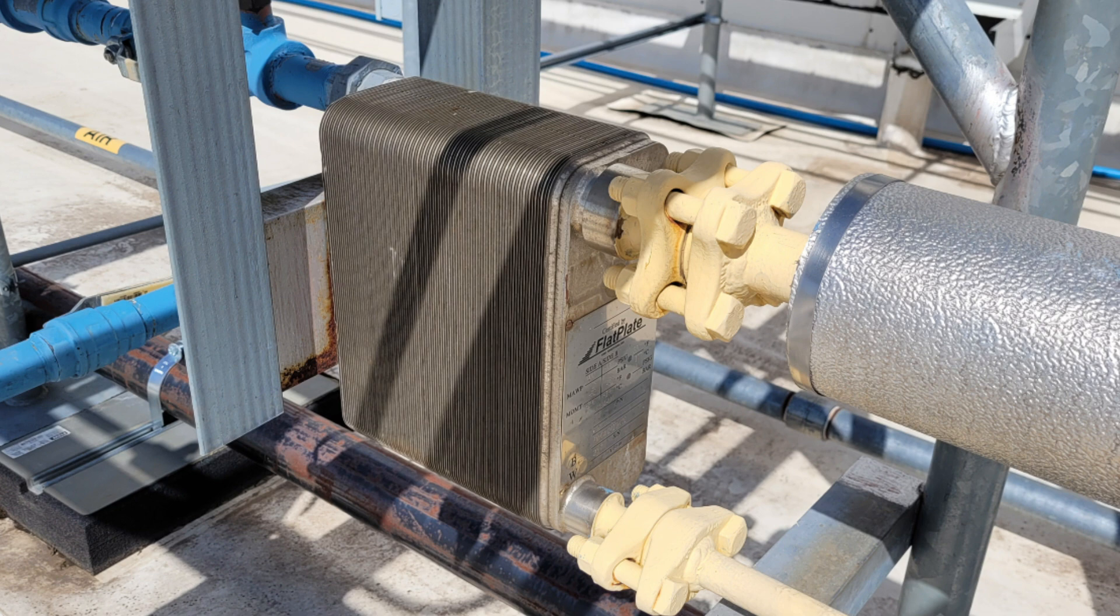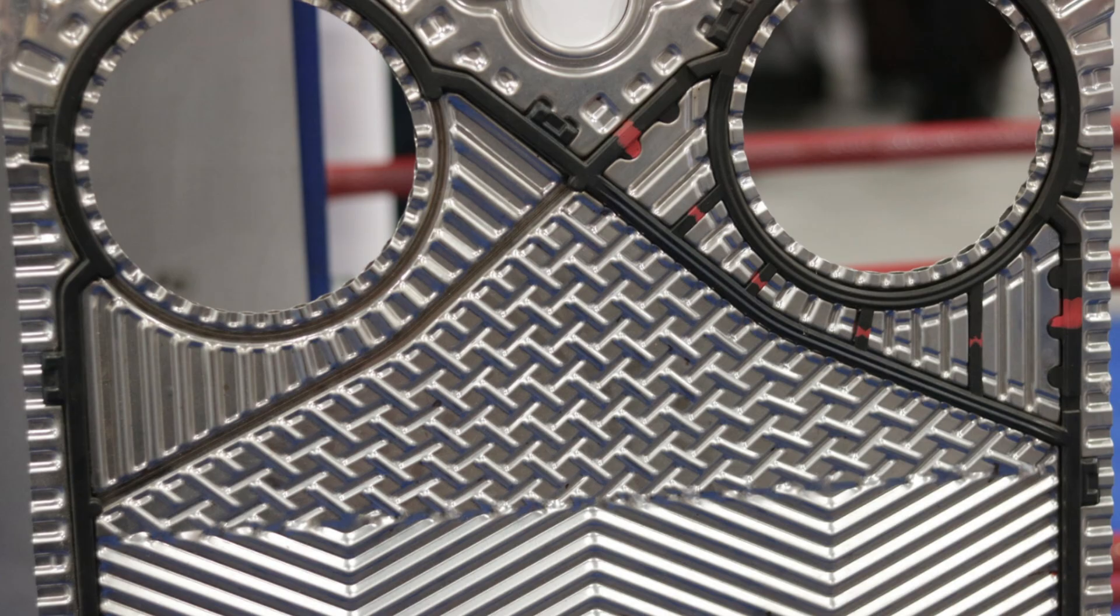In a plate and frame condenser, refrigerant enters the unit on one side of the plates and the cooling water on the other side.